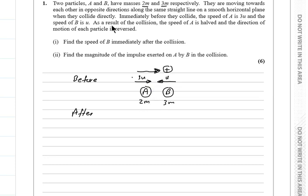Immediately before they collide, the speed of A is 3u. I will draw speed of A to the right with 3u. And the speed of B is u. According to the question, they are moving in opposite directions, so the speed of B will be to the left with speed u. We will put it with a negative sign in our rule. As a result of the collision, the speed of A is halved and the direction of motion of each particle is reversed. So the magnitude of the speed of A will be 1.5u, which is half of 3u.